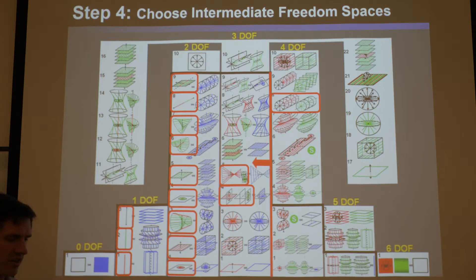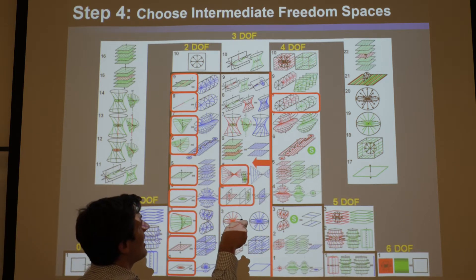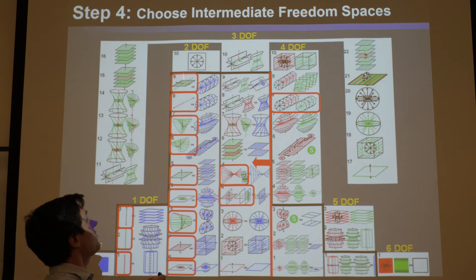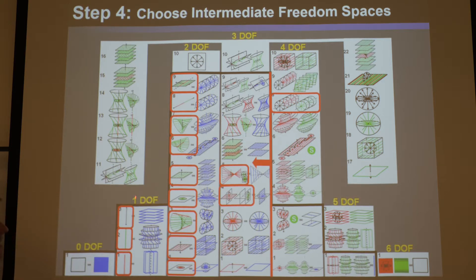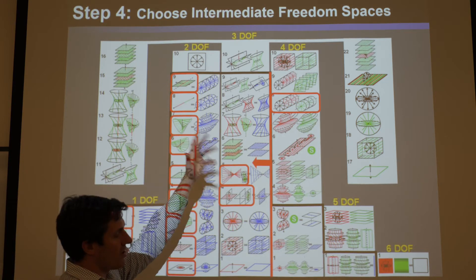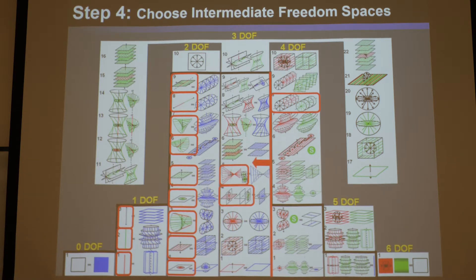There's a chart at the back of that paper. If you look up any freedom space — say 4-DOF type 8 — it will associate with that: 3-DOF type 4 or 5, 2-DOF type 1 through 9, and 1-DOF type 1 through 3. It does that for any freedom space you pick, whether it's in the parallel pyramid or not, and tells you all the intermediate freedom spaces that lie within it.